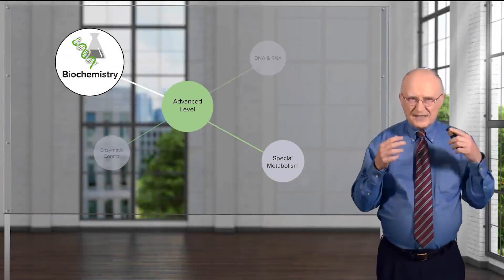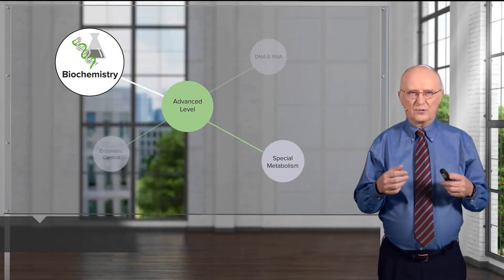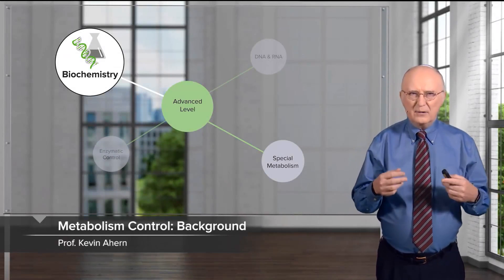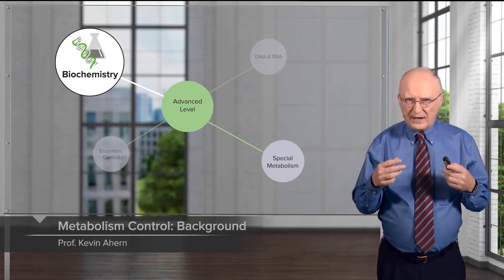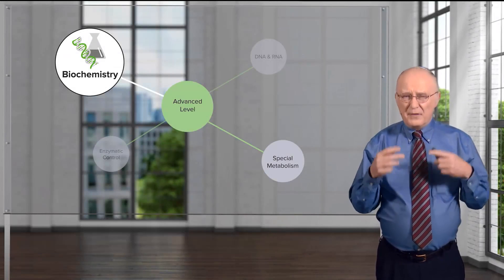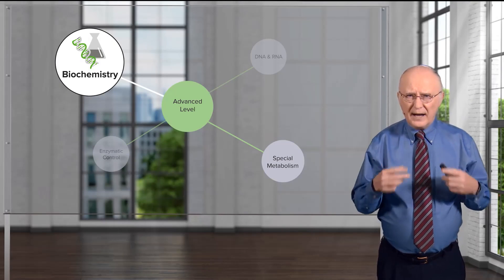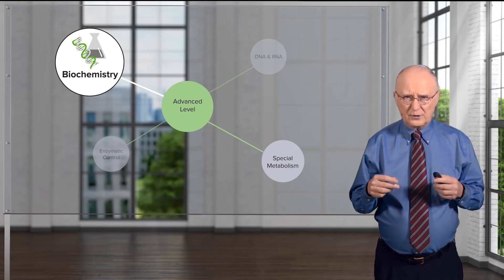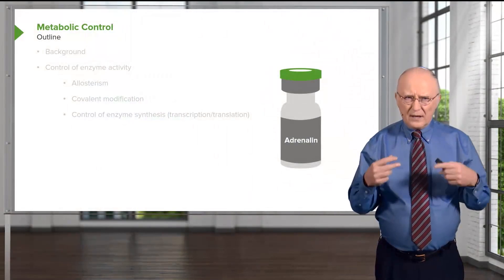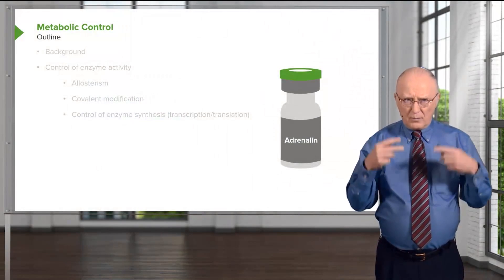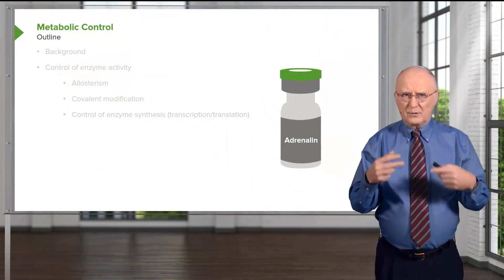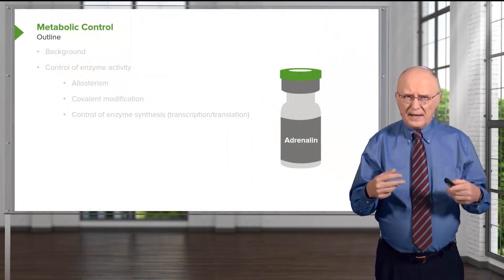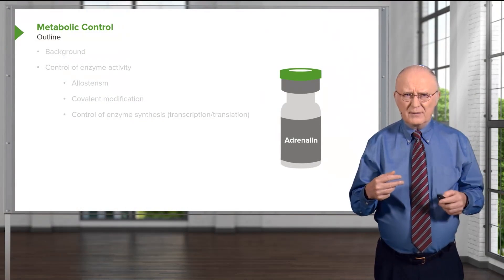Cells are control freaks because they have to be control freaks. If they don't manage the chaos of the biochemistry going on inside of them, then they're likely to run out of energy or not have the energy they need in a critical circumstance. The way in which cells manage their biochemistry is through the phenomenon known as metabolic control, and that would be the subject of this talk.